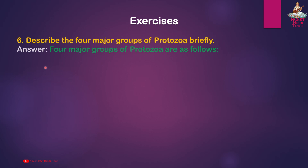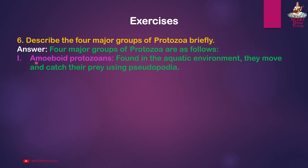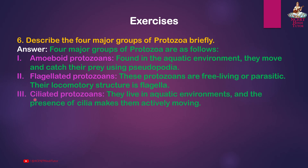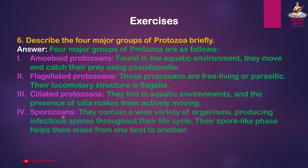Question 6: Describe the four major groups of protozoa briefly. Answer: First, amoeboid protozoans — found in the aquatic environment, they move and catch their prey using pseudopodia. Second, flagellated protozoans — these are free-living or parasitic, and their locomotory structure is flagella.